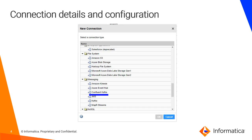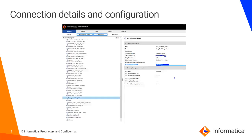This is a screenshot taken from the 10.4.0 admin console, where under messaging there is a new option called Confluent Kafka. Using this you will be able to create a Confluent Kafka connection with Schema Registry.